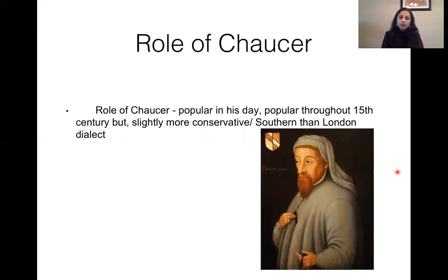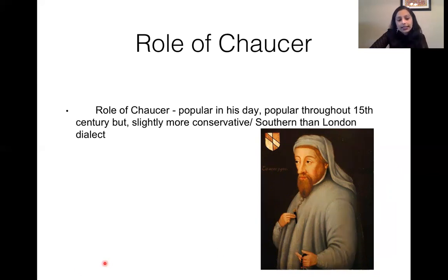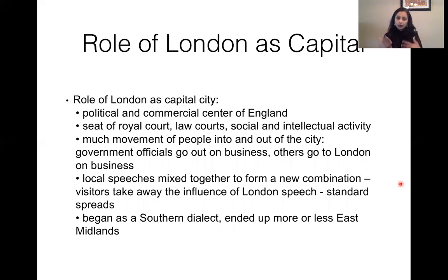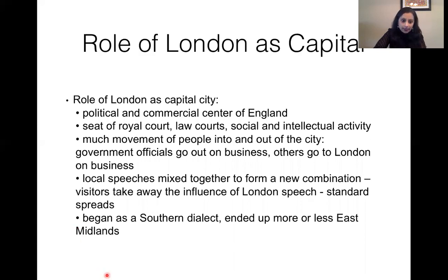And the role of Chaucer — Geoffrey Chaucer wrote in the East Midland variety, also the Southern variety, and the popular London variety, which helped elevate that variety into the standard. But the main reason East Midland became the standard was because of London as capital city — a political and commercial center, seat of the royal court, with a lot of intellectual, social activity and trade. What began as a Southern dialect ended up more or less as the East Midland dialect, and London and Chaucer played a huge role in making East Midland the standard variety of English.